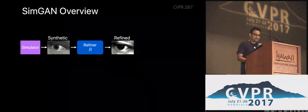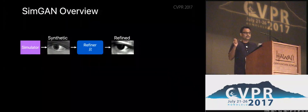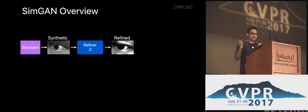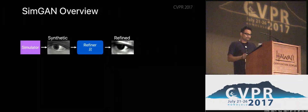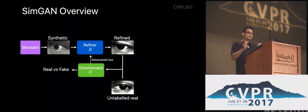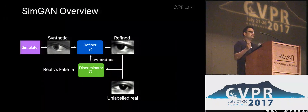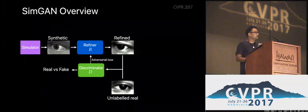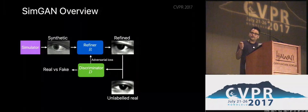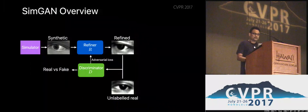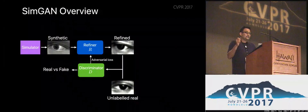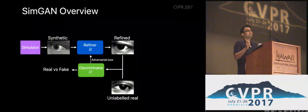We call our approach SimGAN. We have a simulator that generates synthetic images, and then a refiner network — a fully convolutional neural network with a ResNet architecture — that outputs refined images that look realistic. To learn the noise distribution present in real images, you need access to a set of real images, but the key point is that these real images need not be labeled. We use an auxiliary discriminator network — a two-class classification network — where the input is an image and the output is a label: zero for real, one for refined.